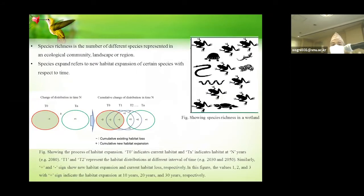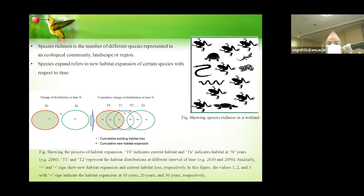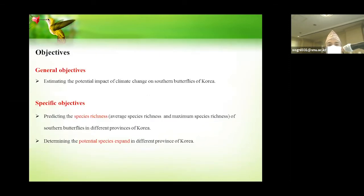Species richness is the number of different species represented in an ecological community, landscape, or region. Here we are discussing the habitat expansion of species — species expand refers to the new habitat expansion of certain species over a respected period of time. In the figure prepared, the initial distribution at T0 increases with time to Tn, and the cumulative increase shows the potential habitat expansion of the organisms.